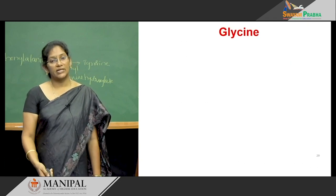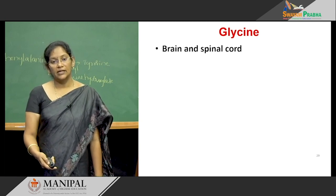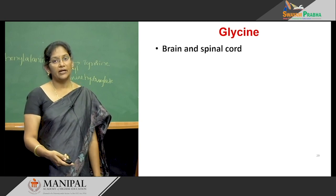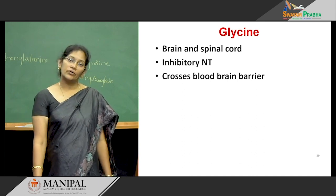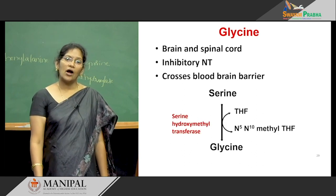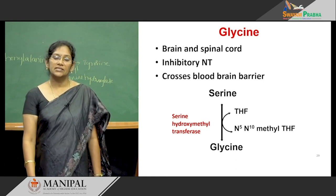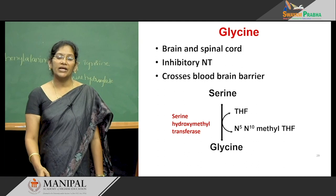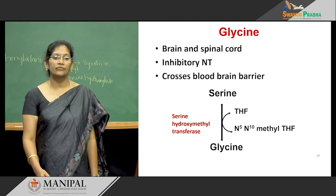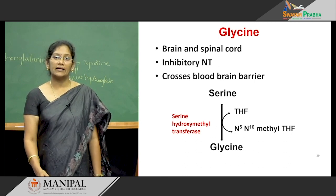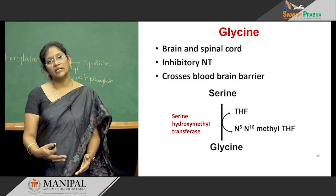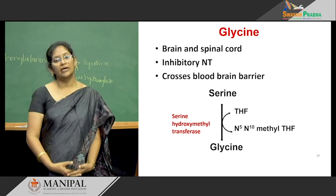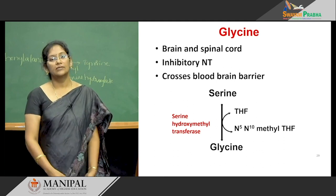The last neurotransmitter is glycine. Glycine is mainly present in the brain and the spinal cord, and it is an inhibitory neurotransmitter. It can mainly cross the blood-brain barrier. Glycine is synthesized from serine, requiring N5,N10-methylene tetrahydrofolate. This reaction is mainly catalyzed by serine hydroxymethyltransferase enzyme. The synthesis of glycine from serine is reversible, and glycine can also be converted back into serine by serine hydroxymethyltransferase.